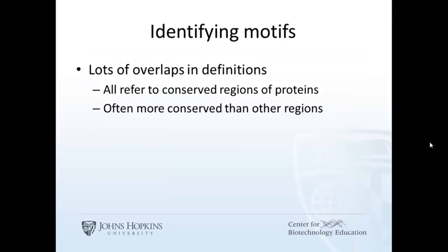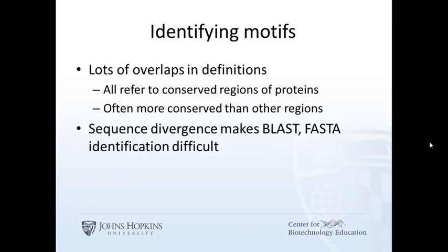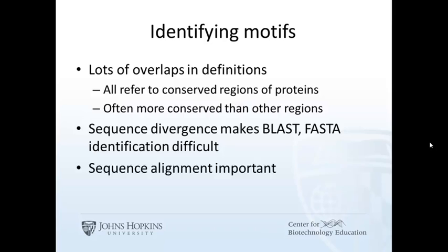Although the definitions may not be consistent and may overlap, one thing is consistent: we are describing conserved regions of proteins — regions that are less tolerant to amino acid changes. Sometimes the sequence similarity is too short for BLAST to pick up. In the case of short motifs, non-homologous proteins might have a similar motif, which would be tough to detect in a similarity search. Patterns and profiles are based on multiple sequence alignment, so the quality of the alignment is critical.